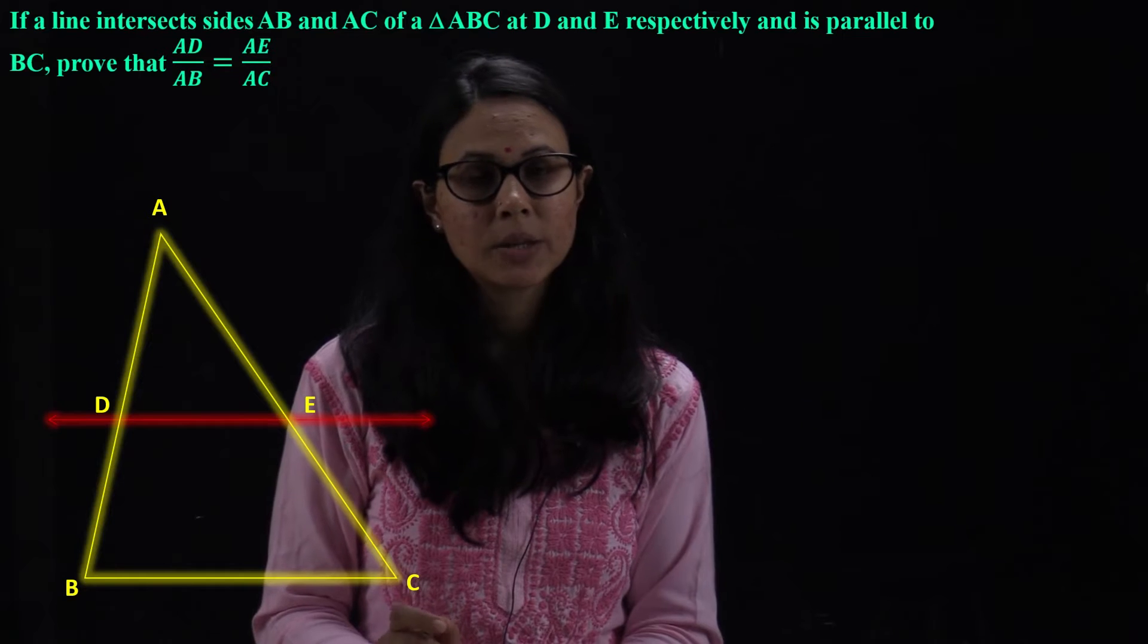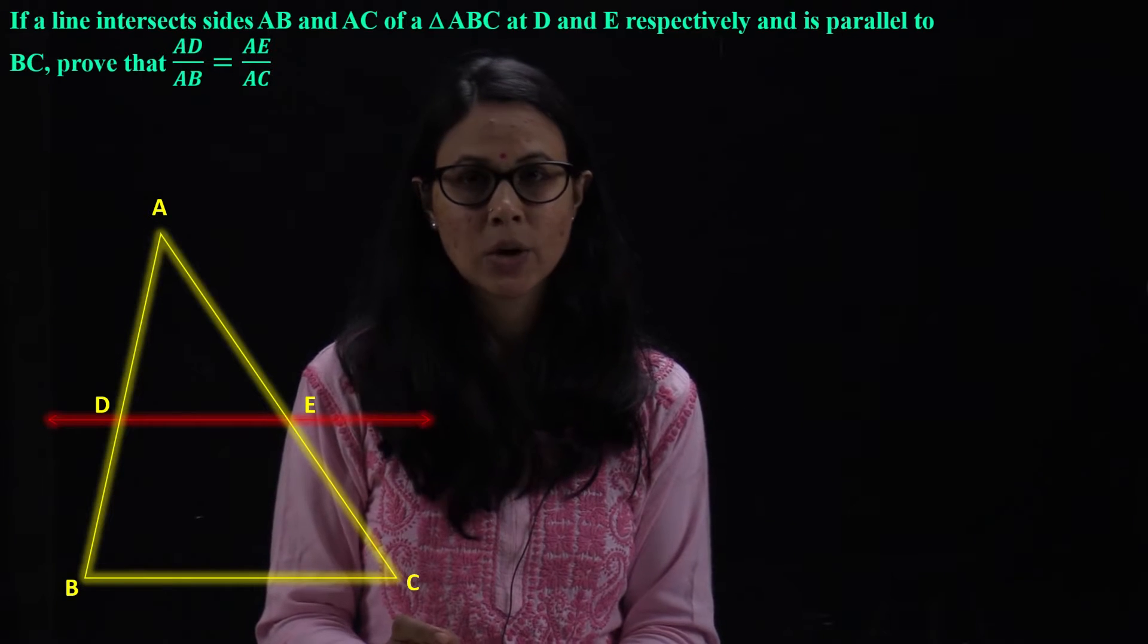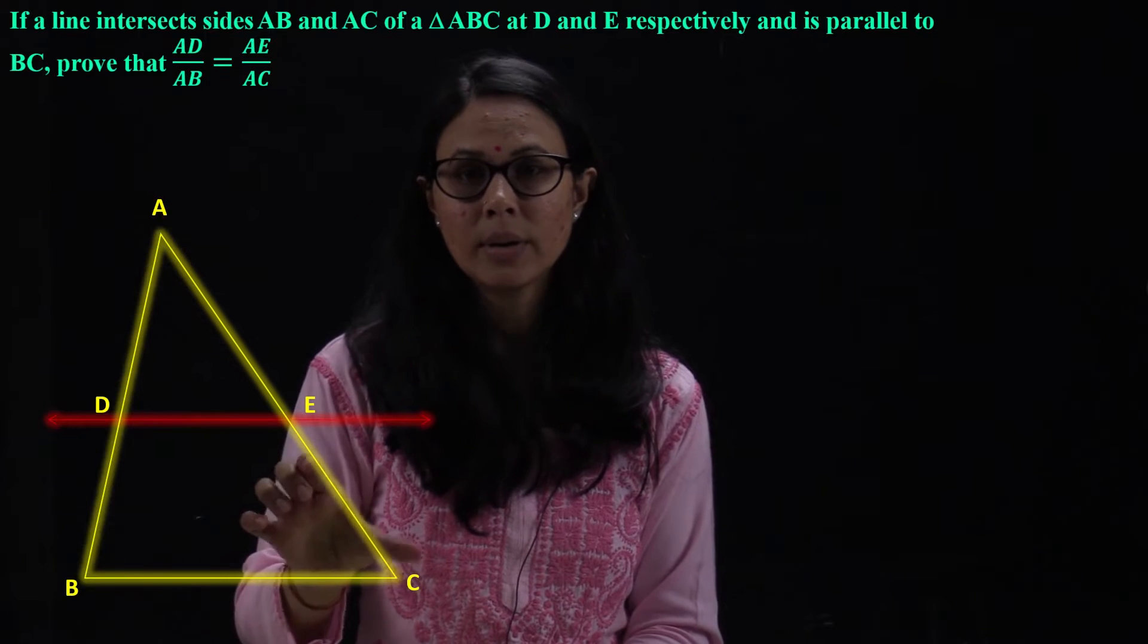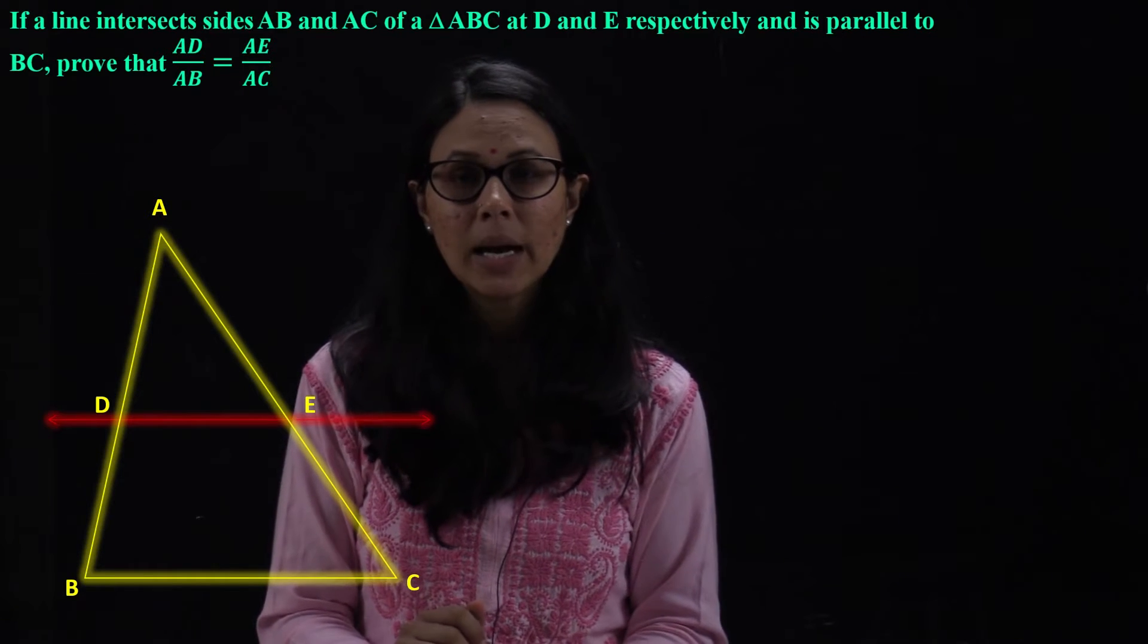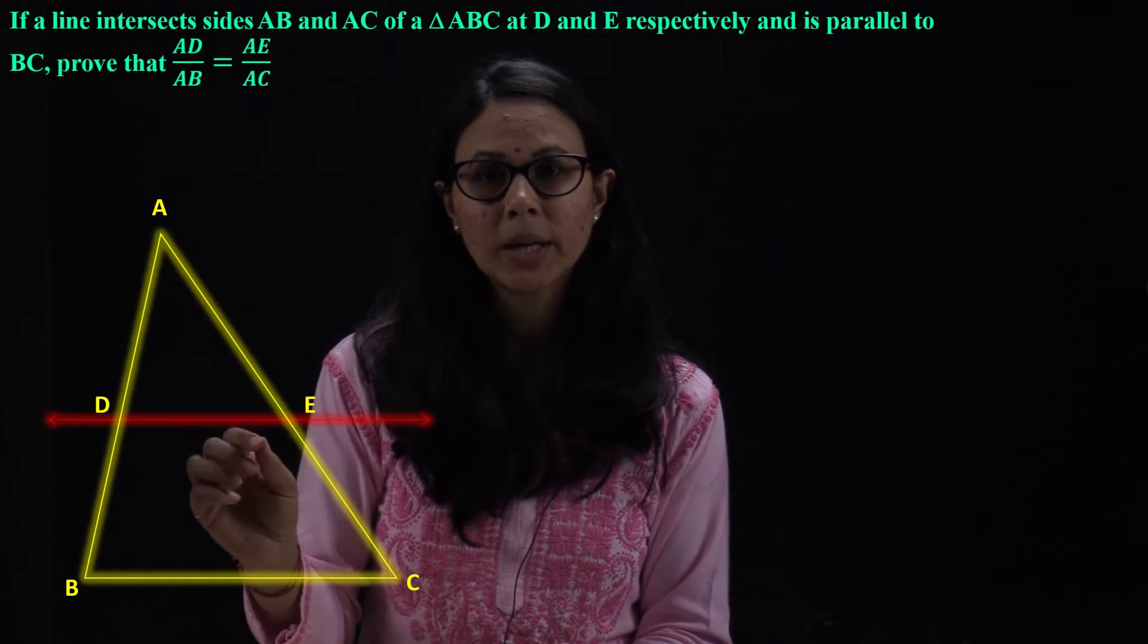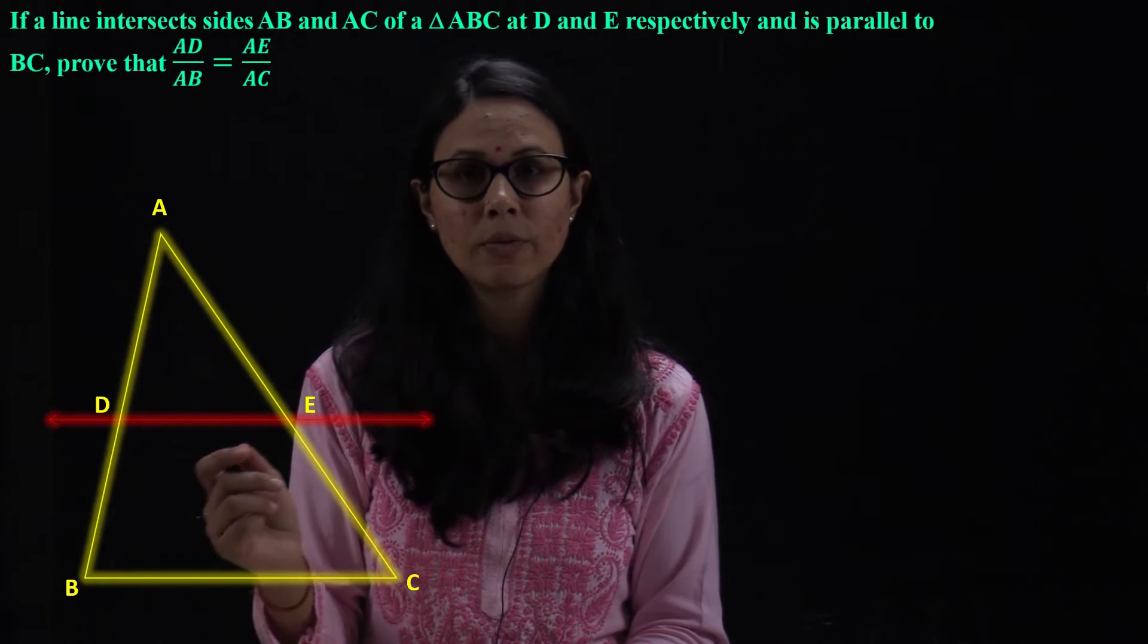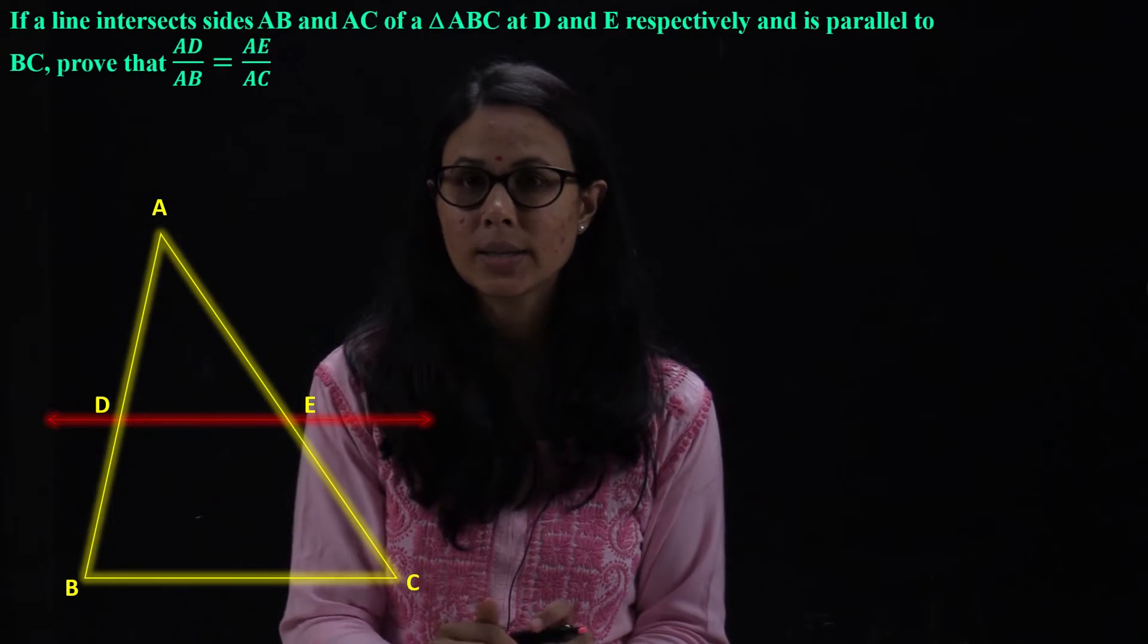we can apply the basic proportionality theorem. So, AD upon BD is equal to AE upon CE. Right? Now, what we will do in the next step? We will reverse the equation or we will add one to get our required answer.